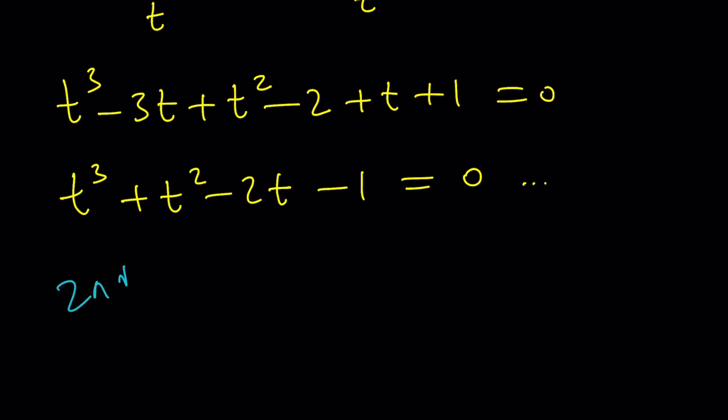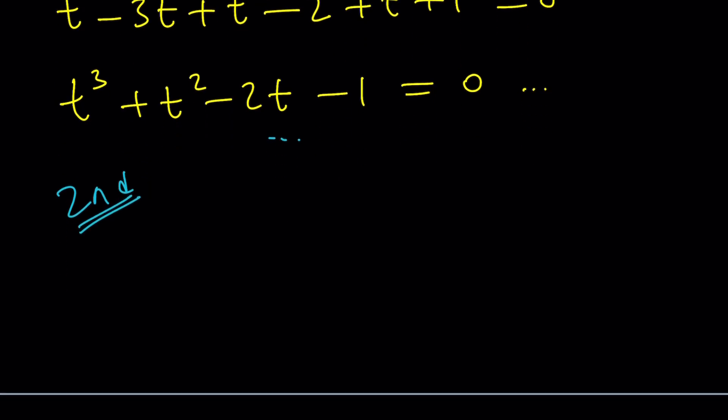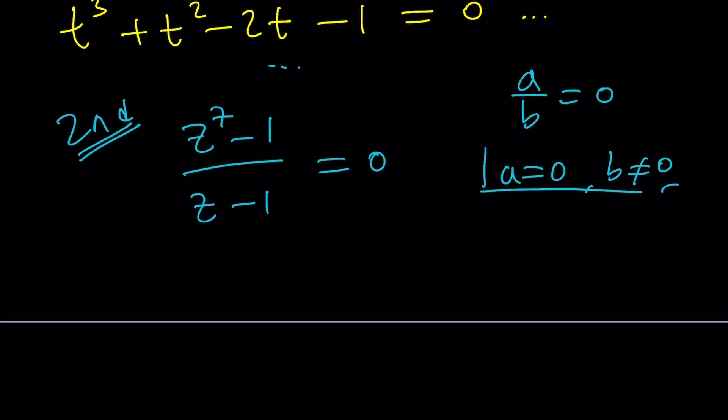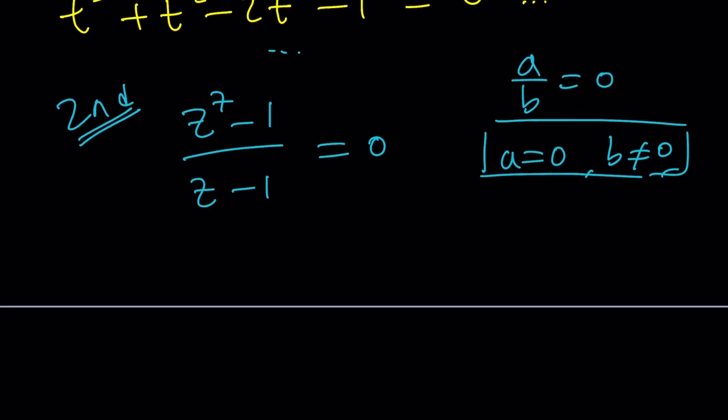So let's now continue with the second method. I know this is incomplete, but we'll hopefully get back to it. For my second method, I want to use something interesting. Why should I get myself in trouble by dividing and getting a really long polynomial? I could just focus on the numerator. Because if A over B is 0, what does that mean? It means that A is equal to 0, but also B does not equal 0 because 0 divided by 0 is not 0. Any opposition? Please let us know in the comments section.